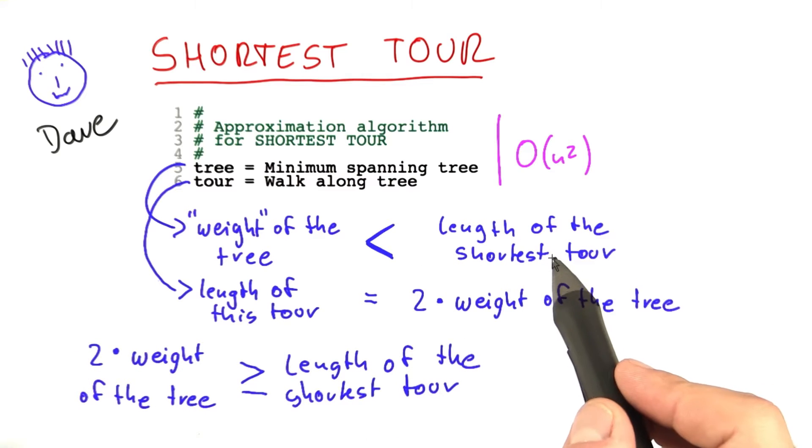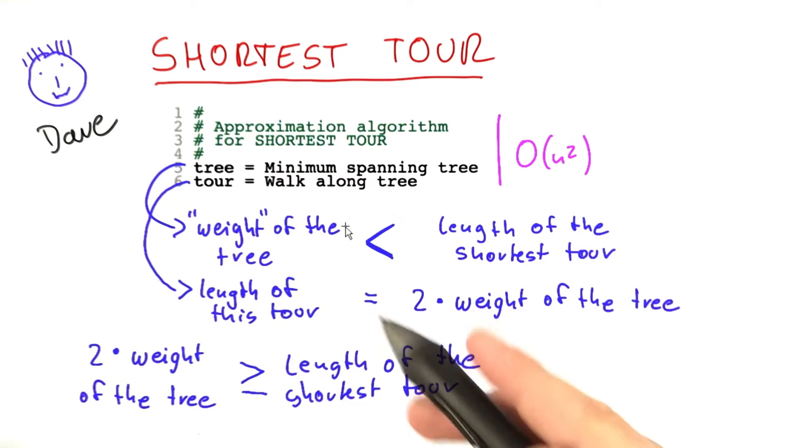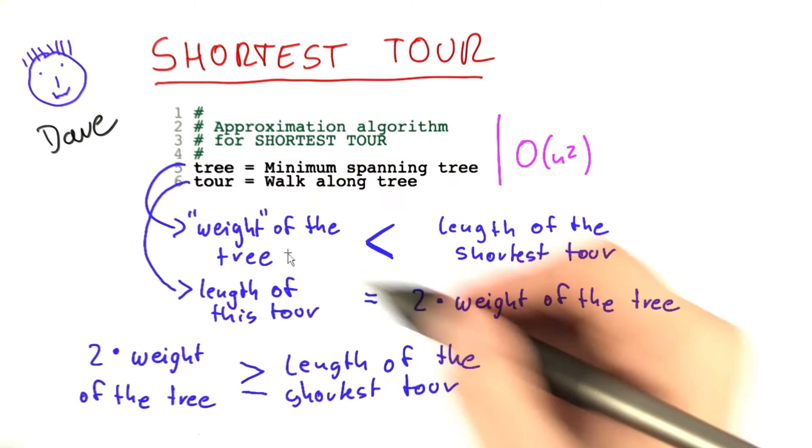We know that the length of the shortest tour is larger than the weight of the minimum spanning tree, so we can put this part down here.